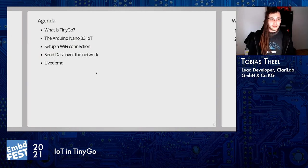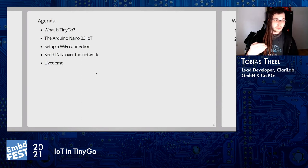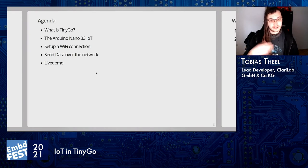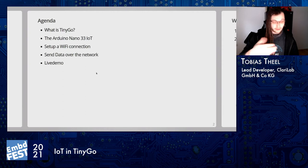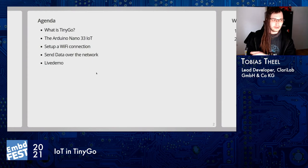What is the agenda? First, what is TinyGo? Then we have a small look at the Arduino Nano 33 IoT microcontroller board. Then we'll dive into some code where I explain how to set up a WiFi connection, and then we'll send some data over the network. Depending on time, we might have a live demo, but I also prepared some screenshots, so we'll see how it works.